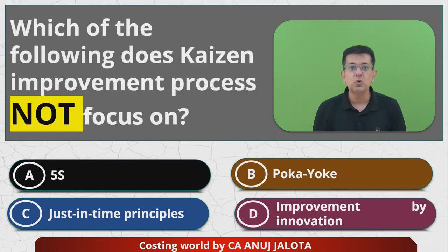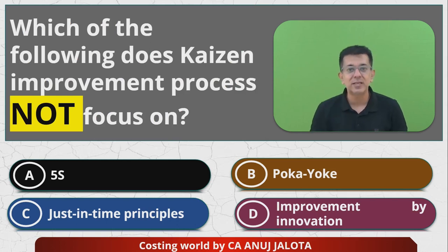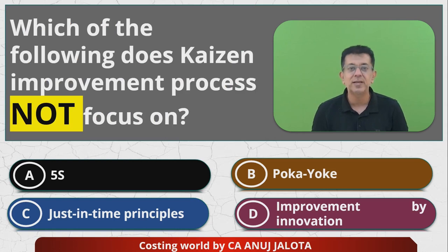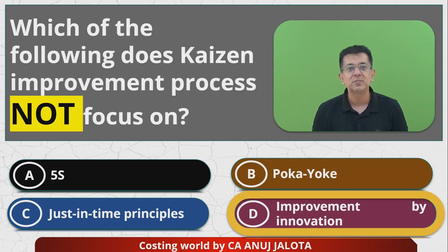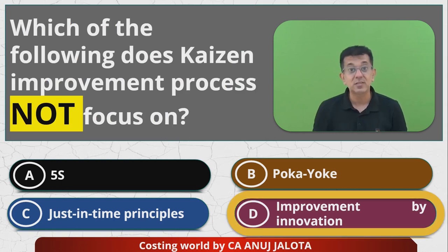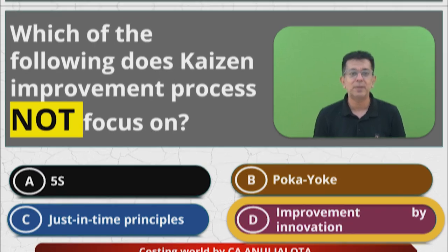So the answer here should be D — improvement by innovation is not part of Kaizen costing. That is the correct answer. I will see you next time with another MCQ. Take care, bye, happy learning.